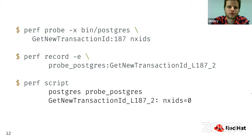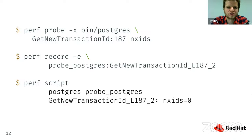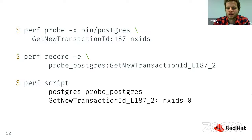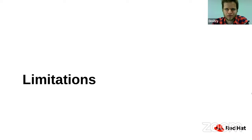We register our dynamic trace point using the probe command, specifying the variable we want to record. Every time Postgres hits this trace point we get events. We record it using the record command, then analyze the file of collected samples. In this particular case, the load applied had no subtransactions whatsoever, so everything looks very clean — but it shows how straightforward and powerful the approach is.